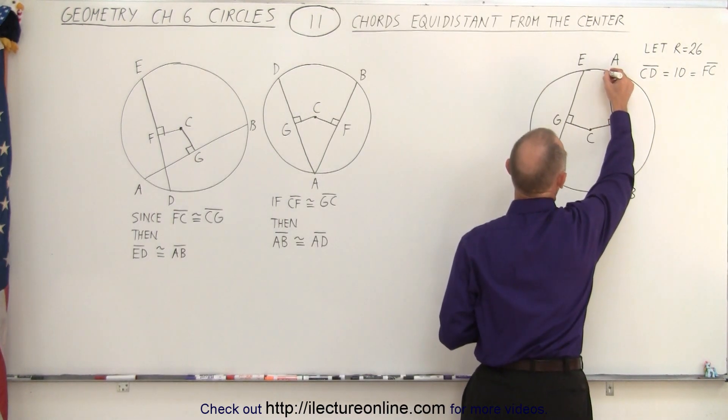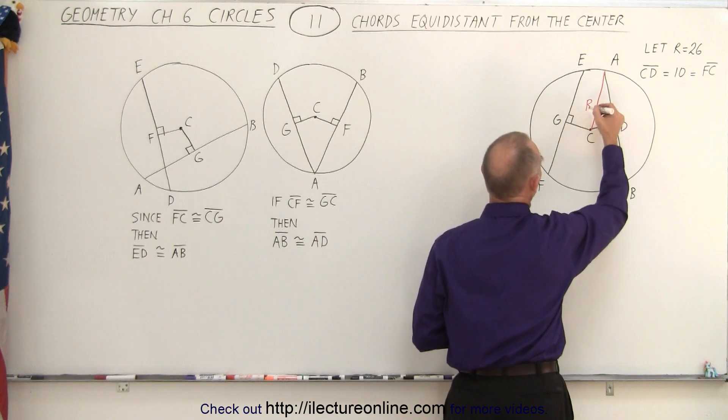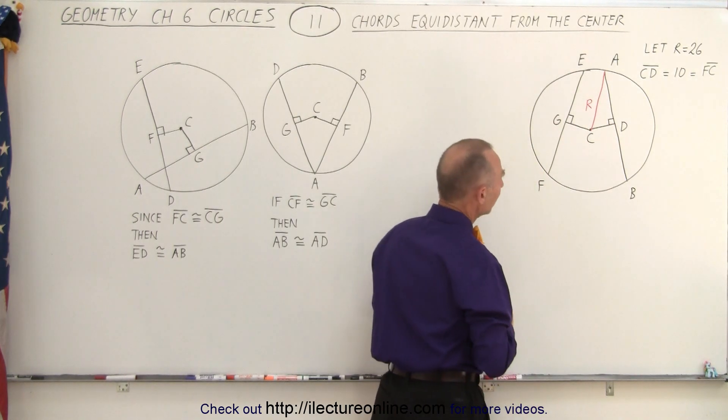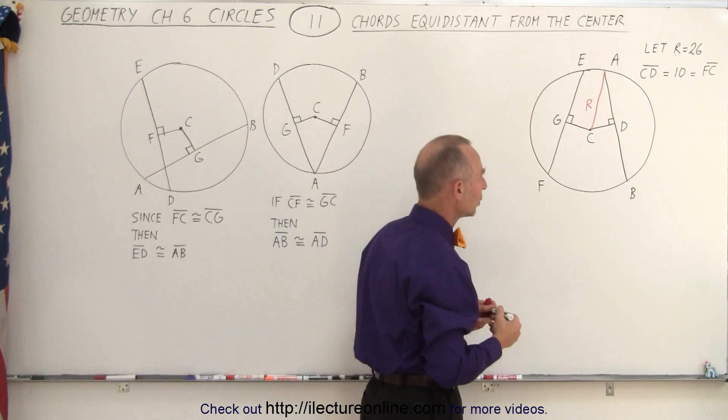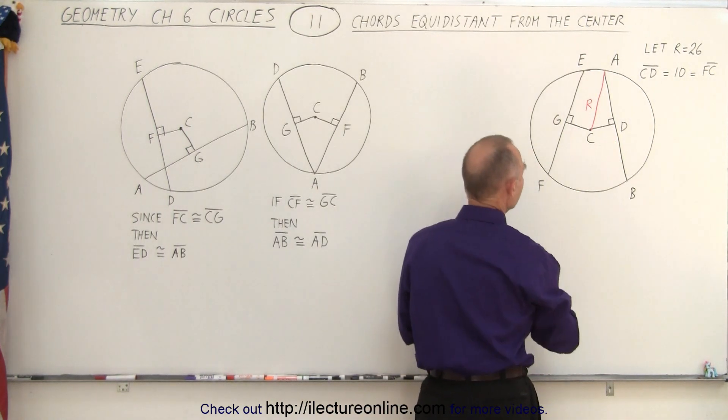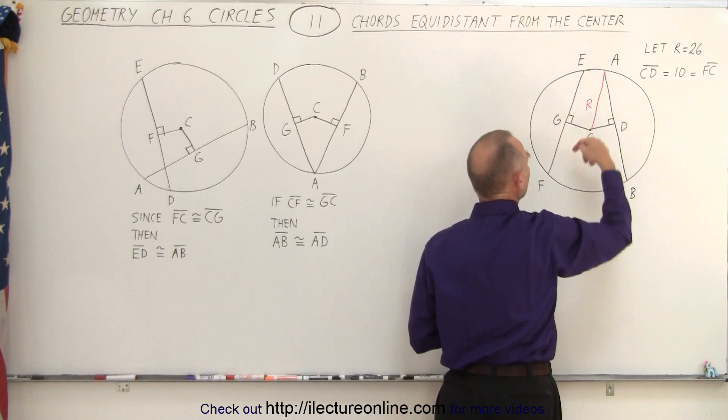Let me draw the radius from A to the center right there. So there's the radius and let's mark it as R for the radius and then we can see that we have a right triangle. Of course with a right triangle we know that the distance from C to D squared plus the distance from D to A squared must equal the radius squared.